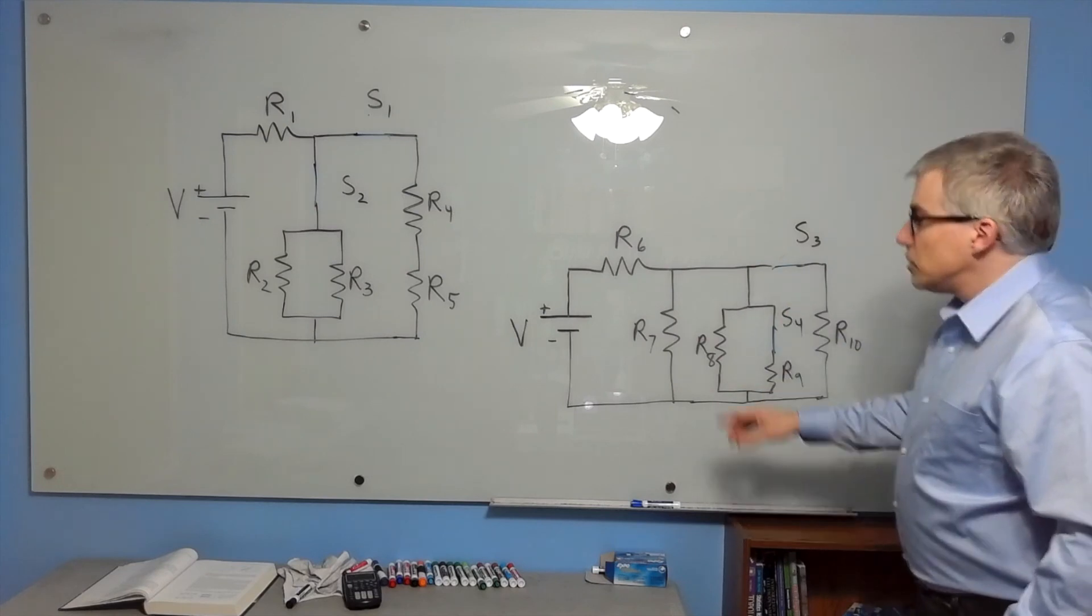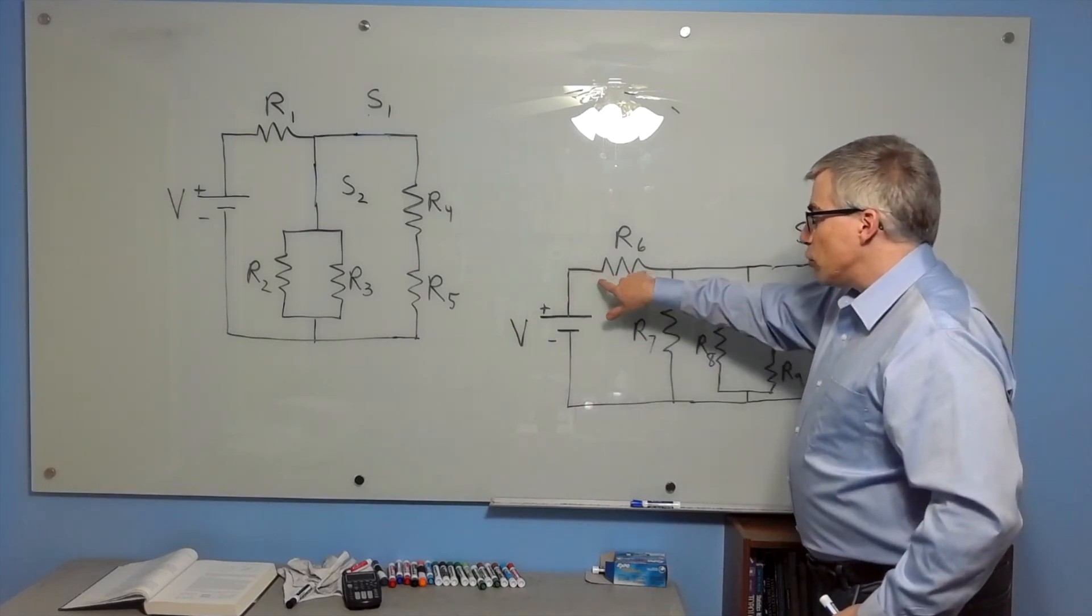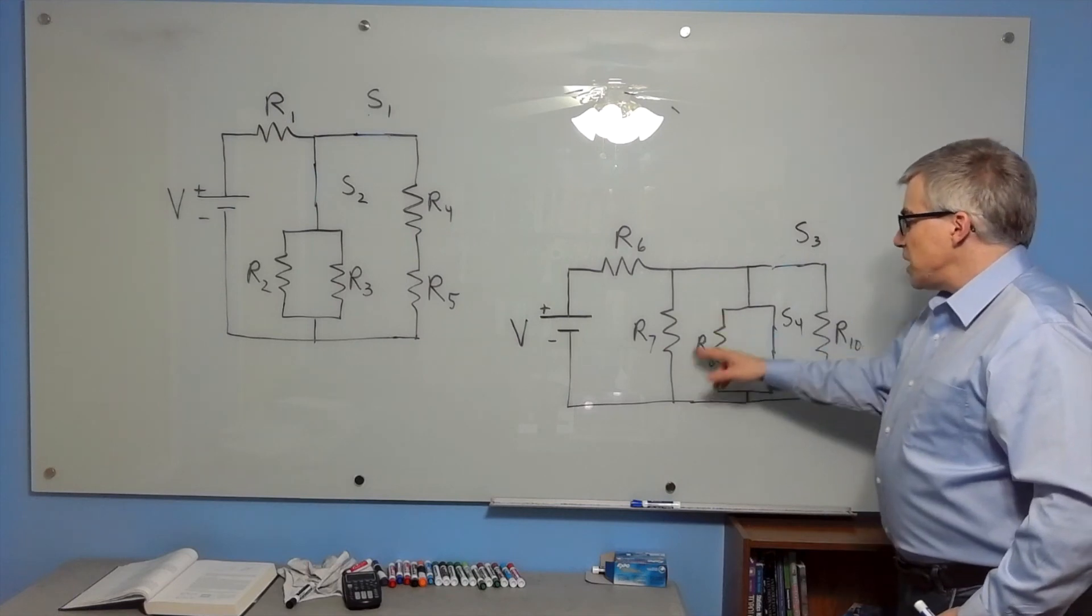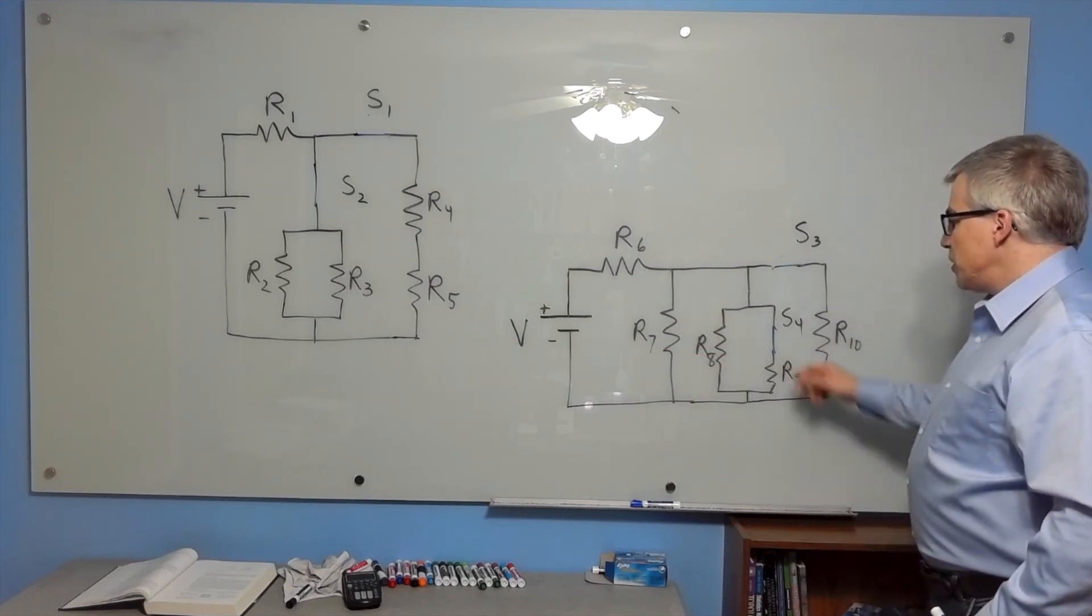The total resistance is lower, the current is higher, more voltage here, less voltage here. So this gets dimmer, dimmer, dimmer, and that turns on.